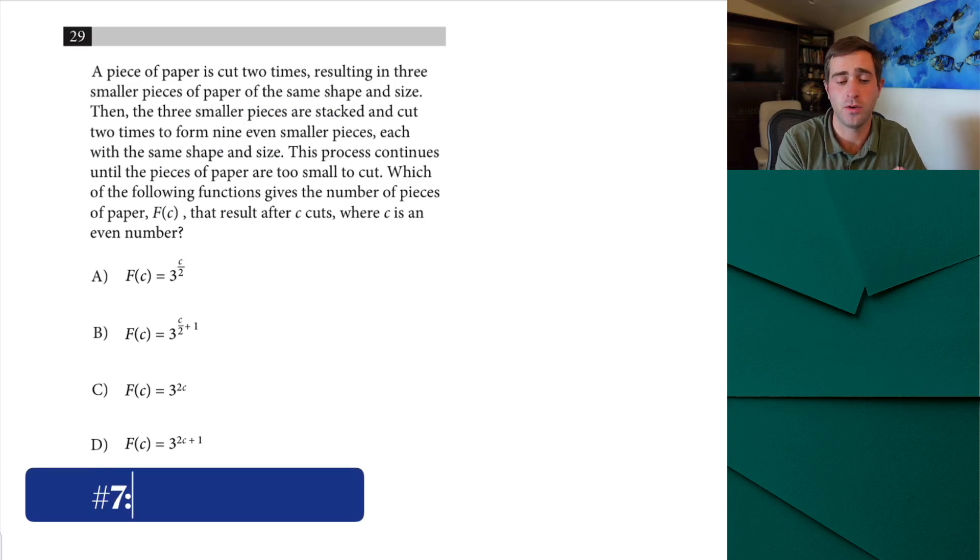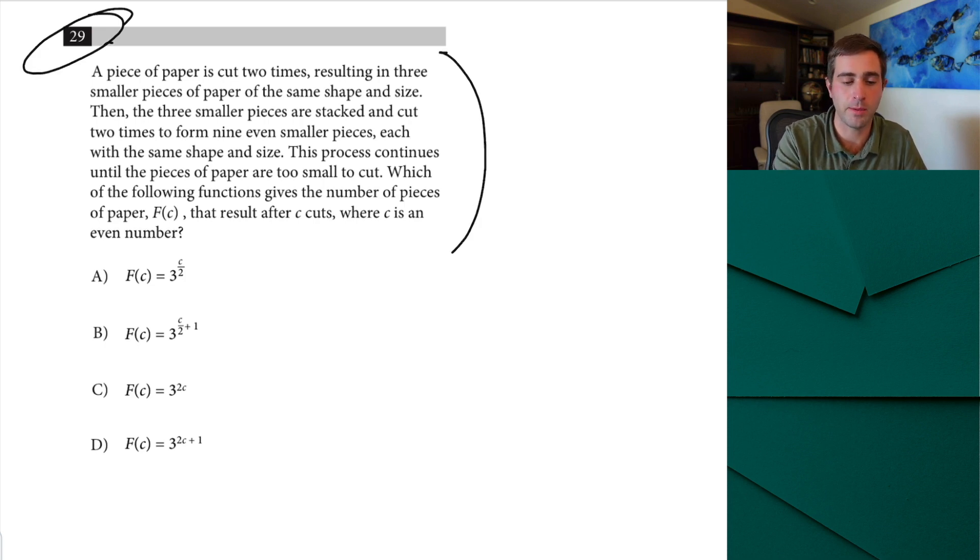Up next is a strategy that can really take the hardest questions on the test and make them way easier. Same way earlier when we were looking at that graphing question we plugged in values if you're dealing with word problems you can often do the exact same to make them way easier. So here we're told a piece of paper is cut two times resulting in three smaller pieces of paper the same shape and size. Then three smaller pieces are stacked and cut two times to form nine even pieces each with the same shape and size. The process continues until the pieces are too small to cut which the following functions give the number of pieces f of c the result after c cuts where c is an even number.